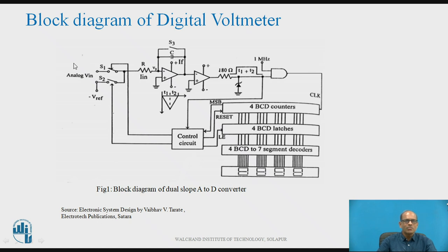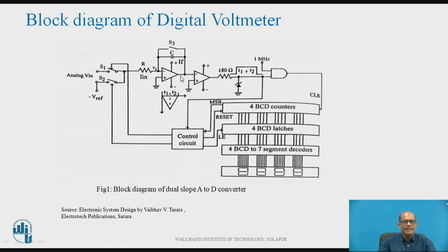The figure shows the block diagram of a DVM using a dual-slope ADC. Starting from the input, you can see the analog input which is to be converted or measured using the DVM — that is analog VIN — and the reference voltage is minus V-reference. Then switches S1 and S2, and after the switches there is an inverting integrator using an op-amp. The output of the integrator is applied to a comparator.